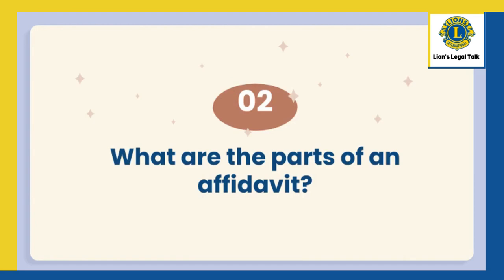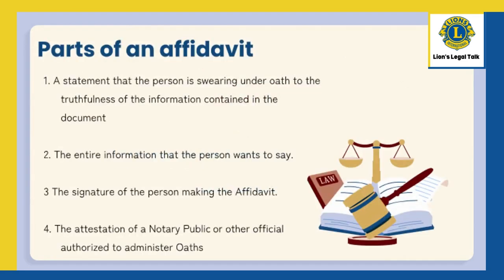What are the parts of an affidavit? The basic form of an affidavit has four parts: one, a statement that the person is swearing under oath to the truthfulness of the information in the document; two, the entire information that the person wants to say; three, the signature of the person making the affidavit; and four, the attestation of a notary public or other official authorized to administer oaths.